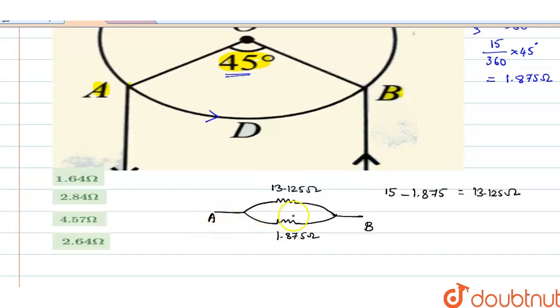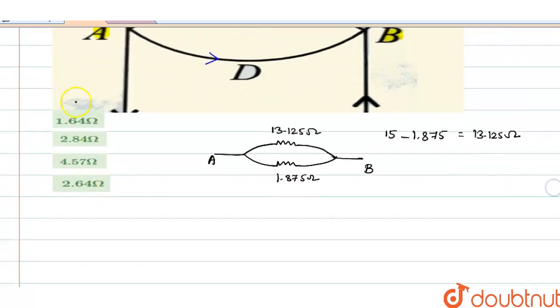Now we will find the equivalent resistance. These two resistances are connected in parallel. The equivalent resistance R_eq will be equal to R1 times R2 divided by R1 plus R2.